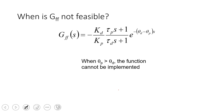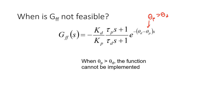A dynamic feedforward controller is not feasible when theta_p is greater than theta_d — when the dead time of the process is greater than the dead time of the disturbance. That would require the controller to act in anticipation of a disturbance before it's even been measured, effectively predicting the future. This is not physically realizable; we can't anticipate a disturbance before it happens.